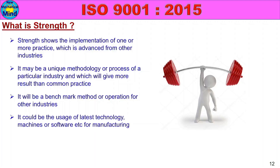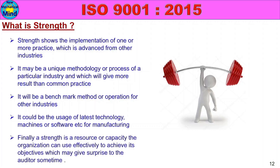A strength could also be the usage of latest technology, machines, or software for manufacturing and production. Finally, a strength is a resource or capacity the organization can use effectively to achieve its objectives — which may even surprise the auditor. When a company achieves its objectives through excellent resources and capacity, that is strength.